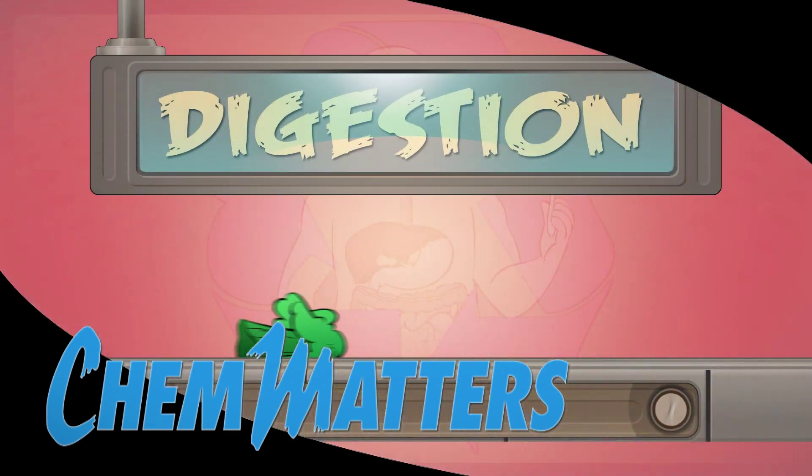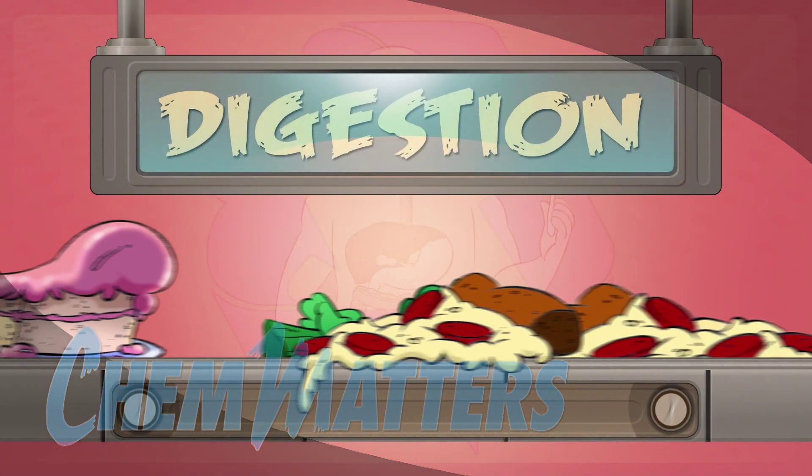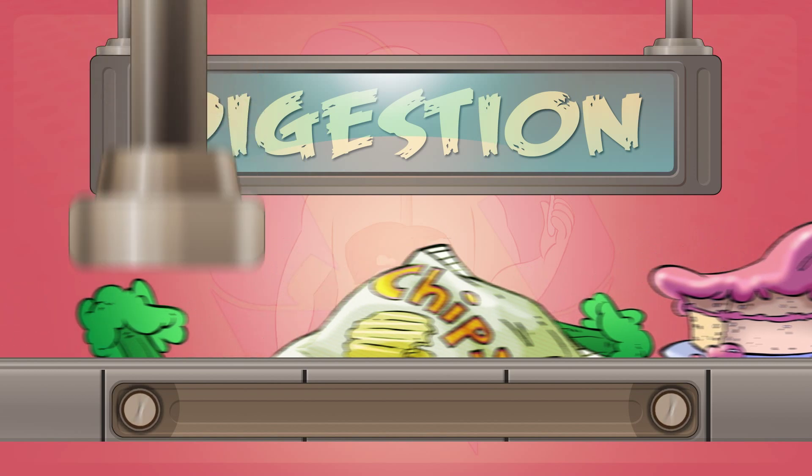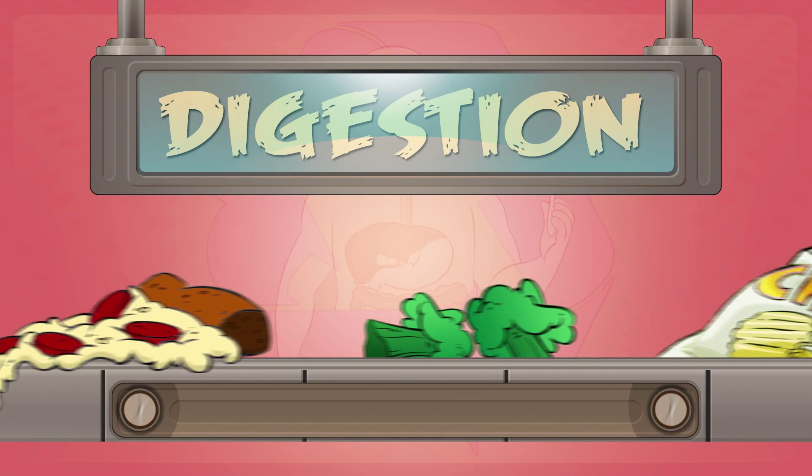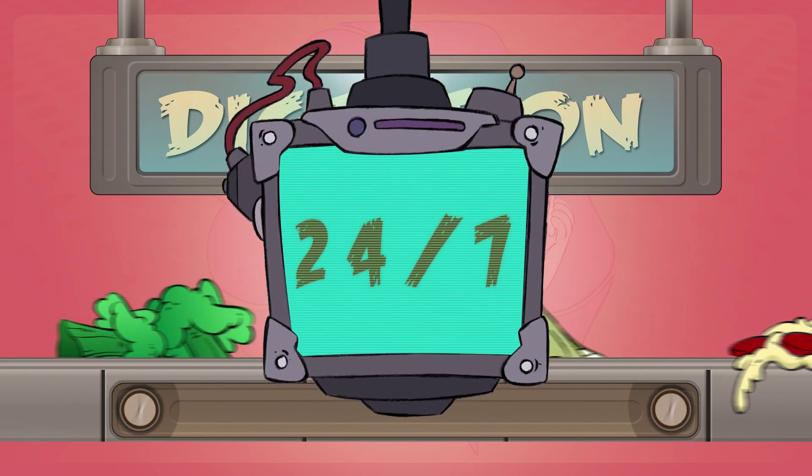You could call digestion a disassembly line. Your body takes whatever morsel of food you give it, breaks it down, wrings out all the nutrients it can, and discards the waste. It's an amazing example of chemistry in action, and it happens 24-7.